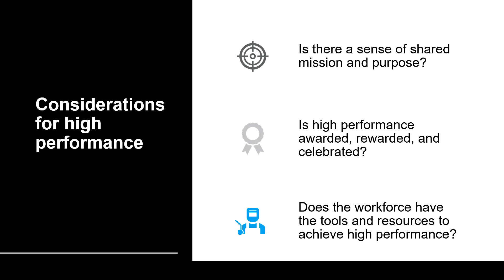Performance management is about how your organization creates the context in which high performance is the norm. There's no single formula, but some considerations include: Do we have a shared sense of mission and purpose? Many people choose careers in higher education because of passion for the work — how is that passion connected to your organization's mission? How does your unit recognize and reward high performance — do you celebrate big grants, major publications, or helping a student persist to graduation? And does the workforce have the tools and resources to achieve high performance? Having the right tools can make a huge difference even for those who aren't highly skilled.